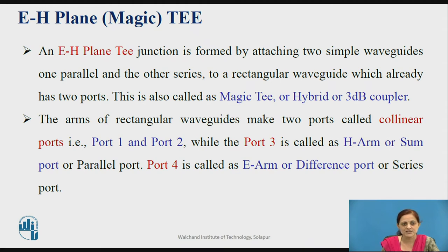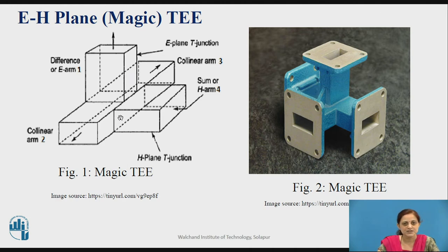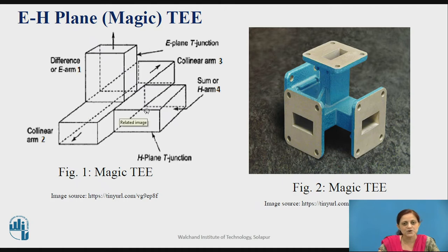The arms of the rectangular waveguide that make the two ports are called collinear ports. That is, the rectangular waveguide already having port 1 and port 2 which are collinear, while port 3 is called the H arm or it is connected in parallel — therefore it is also called the parallel port. Port 4, E, is connected in series, so it is called the E arm, or difference port, or series port. This is the Magic T junction, where port 1 and port 2 are collinear, the H arm is connected at the side arm, and the E arm is connected at the top — it is the combination of E and H plane T.